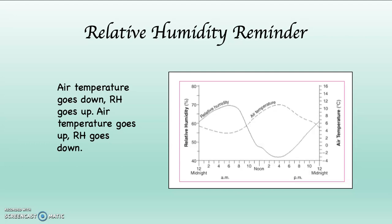Let's take a look back at this graph — this 24-hour graph that goes from midnight to midnight. Notice that when air temperature is going up, relative humidity is going down, and when air temperature is going down, relative humidity is going up. These two things have an inverse relationship to each other. I've highlighted relative humidity in purple and air temperature in lime green, so you can see that these things are inverse.